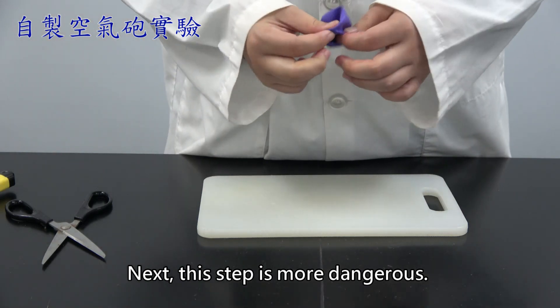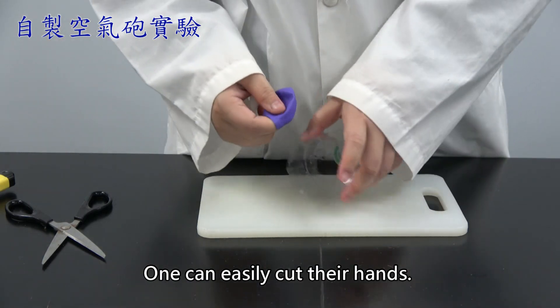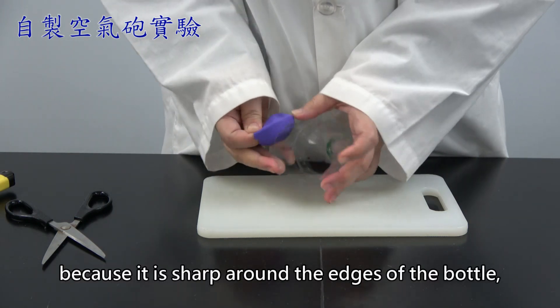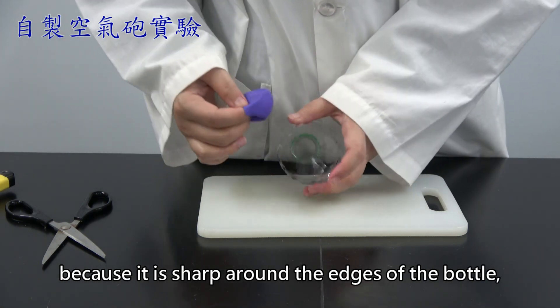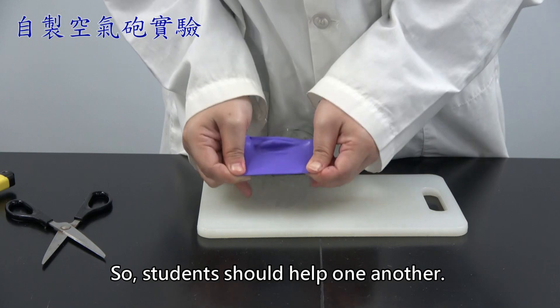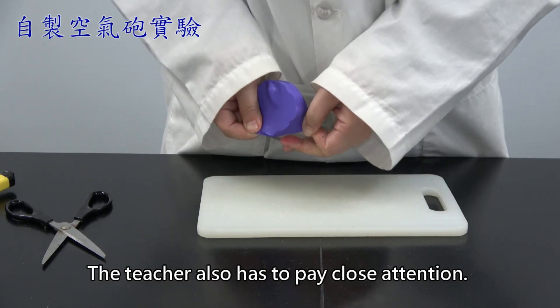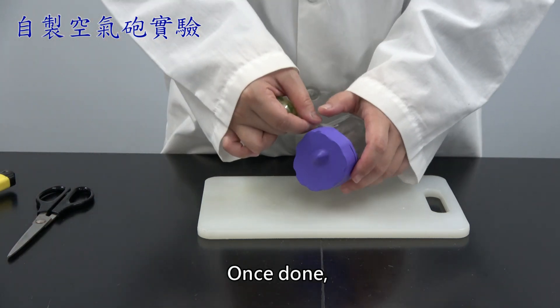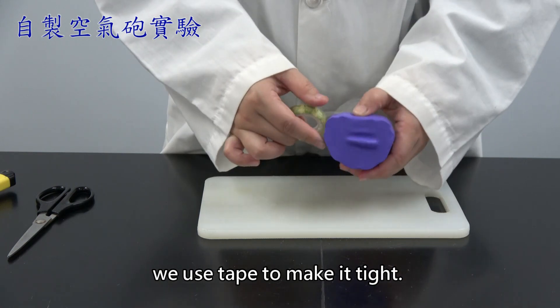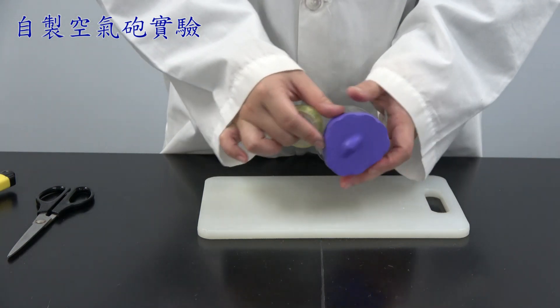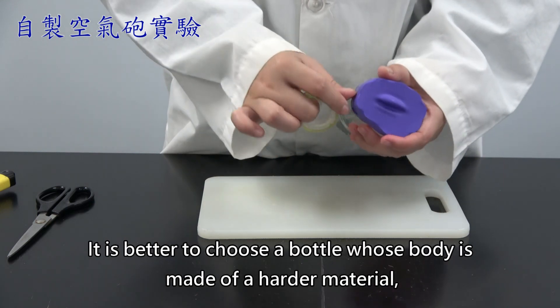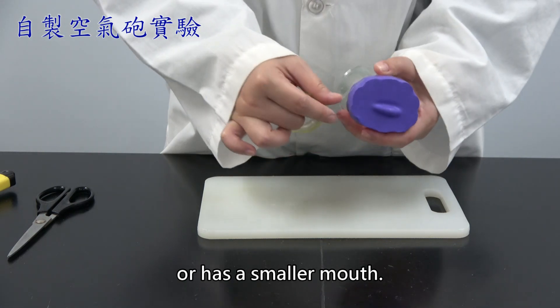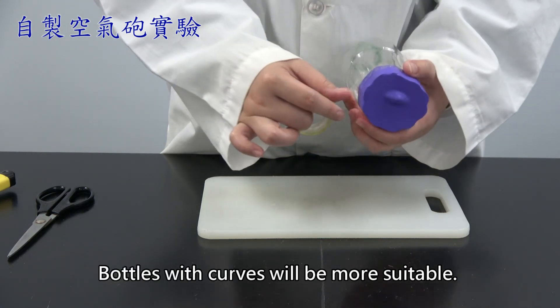Next, this step is more dangerous. One can easily cut their hands. We advise that you ask for the teacher's help. When placing it because it is sharp around the edge of the bottle, one can easily get cut. So, students should help one another. The teacher also has to pay close attention. Ask students to help one another when they are putting it on. Once done, we use tape to make it tight. It is better to choose a bottle whose body is made of a harder material or has a smaller mouth. Bottles with curves will be more suitable. It will be easier to put it on.